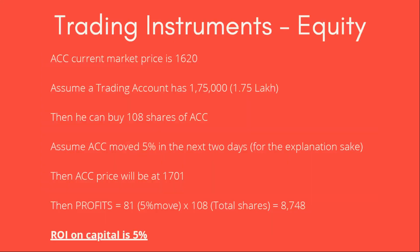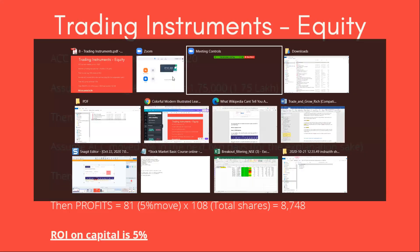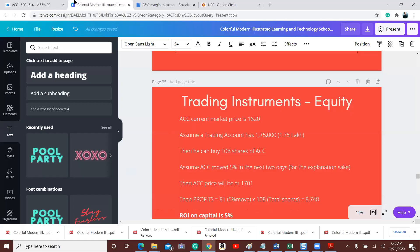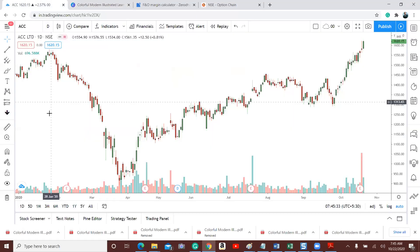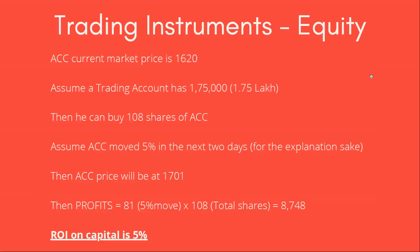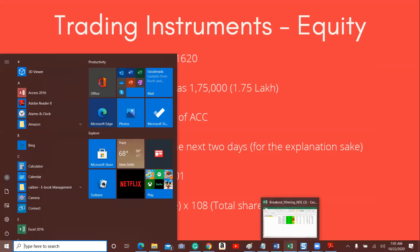We will take an example using ACC stock. The current market price of ACC is 1620 — we will check it on the charts. Assume a trading account has 1,75,000 rupees. In this case, you can buy 108 shares of ACC. I will show it in the calculator.